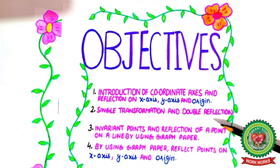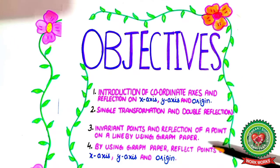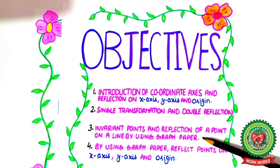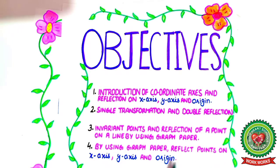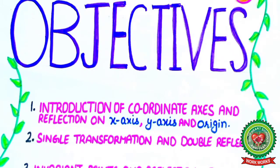The second objective is single transformation and double reflection. Then, invariant points and reflection of a point on a line by using graph paper, and reflecting points on x-axis, y-axis and origin using graph paper. Today, we are going to discuss single transformation and double reflection.